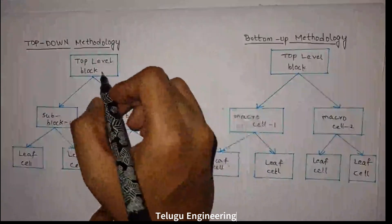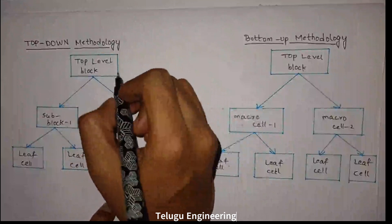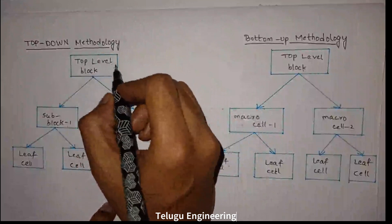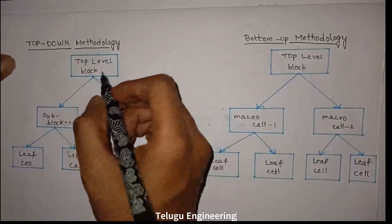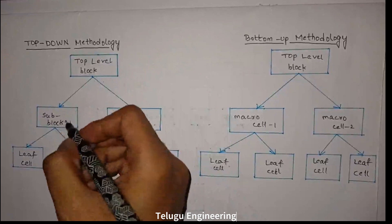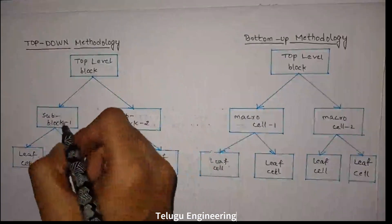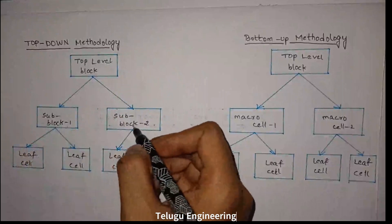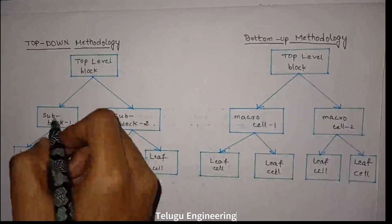In top-down methodology, we first define a top-down block. Then we will break it into multiple sub-blocks. So now we have sub-block 1 and sub-block 2, and we will break into each and every sub-block.